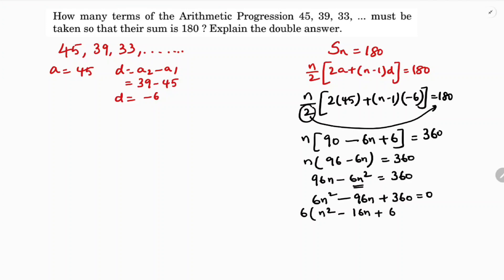So now if I'll factorize, n square minus 16n plus 60 equals 0. So 60 factors are like 10 times 6. N square minus 10n minus 6n plus 60 equals 0.